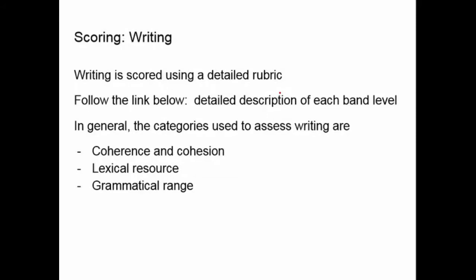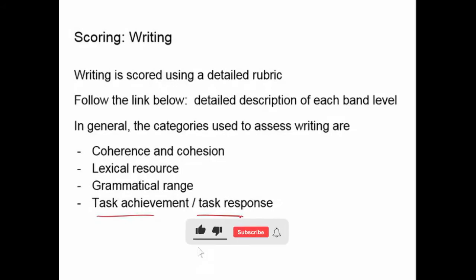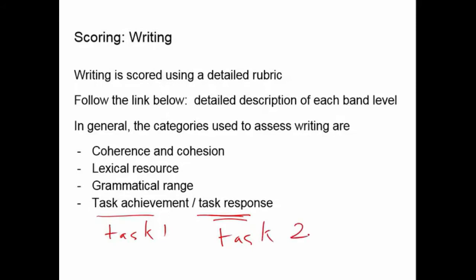Grammatical range means you use a variety of structures and use them accurately when you write. Task achievement is for task one responses and means you fulfilled all the requirements for the task and followed the directions carefully. Task response is for task two writing and means you wrote a good academic formal essay in the correct fashion. When we get to writing lessons, we'll talk about each one of these in detail.